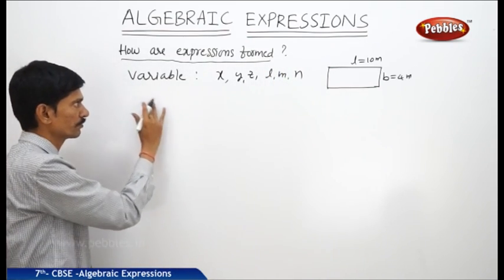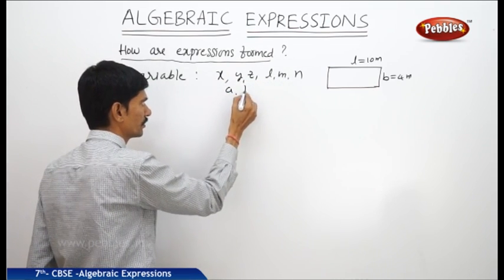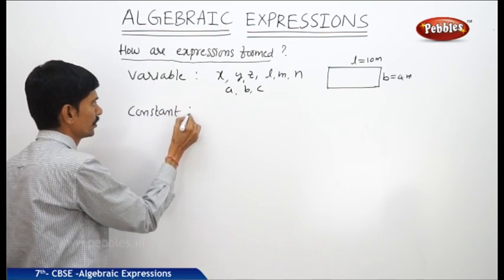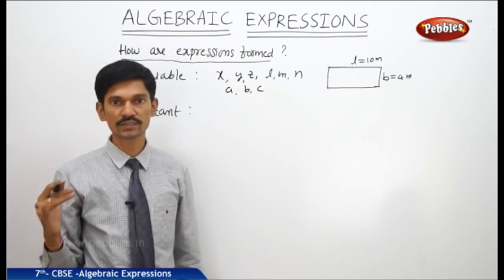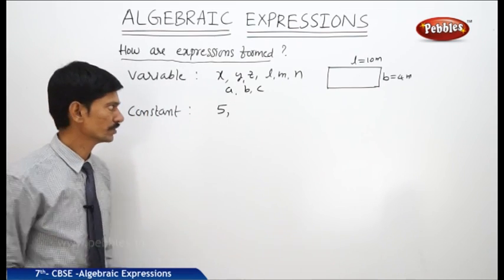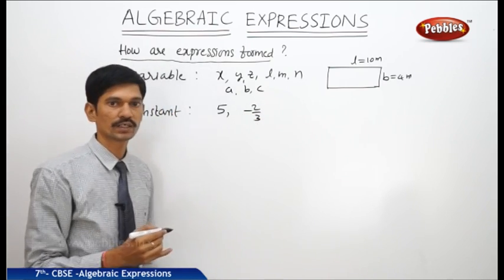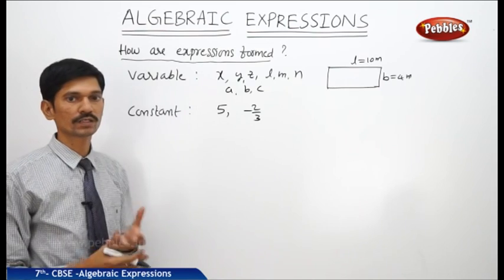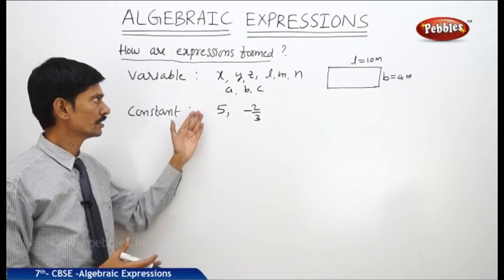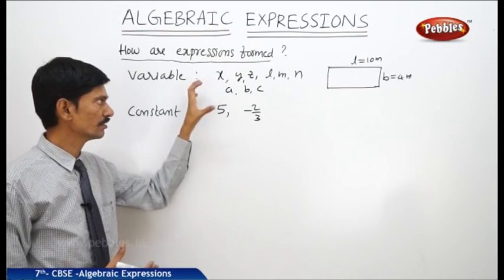That is why the variables are denoted by lower case letters like x, y, z, l, m, n or a, b, c. Then what is a constant? A fixed value is known as a constant. For example, 5 is fixed at any time, anywhere — it does not change. And minus 2 by 3 is also a constant; it does not change. So the fixed values are known as constants, and variables can be changed — they do not have any fixed values. We take lower case letters to represent the variables.